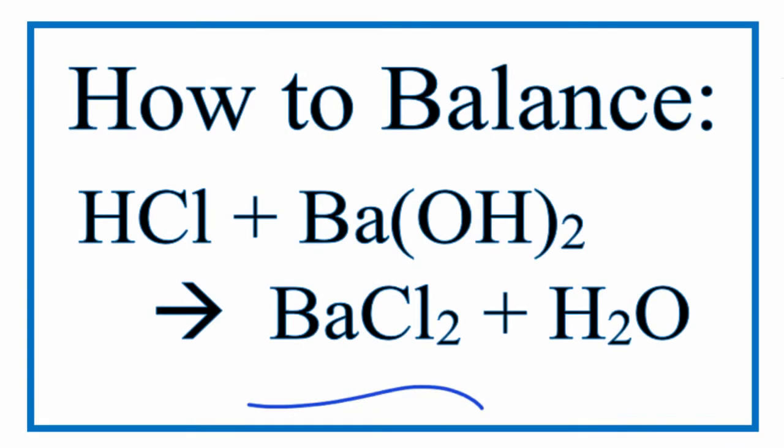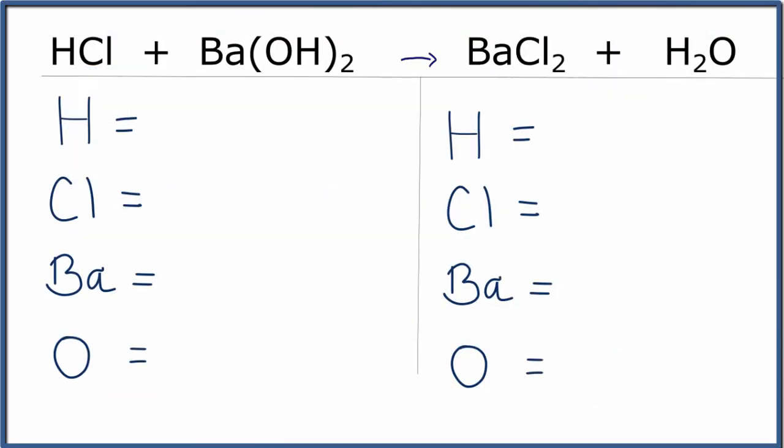So here we have HCl plus Ba(OH)₂ yields BaCl₂ plus H₂O. I've written all of the atoms that show up in this equation, and we're going to try to get them to be the same on each side.